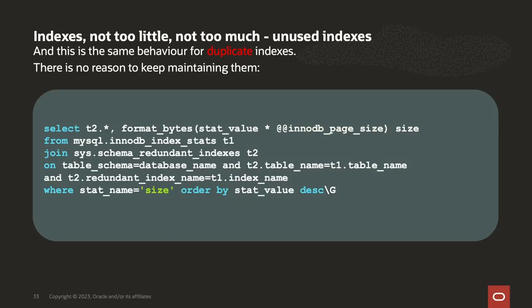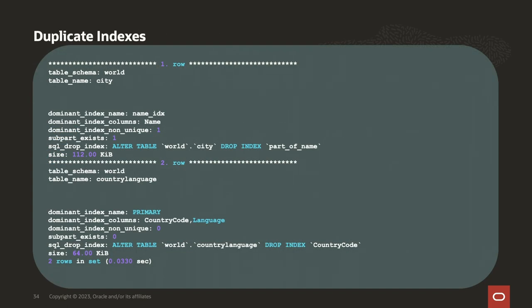Another issue is that sometimes people create duplicate indexes on the same column — you don't need that either. We can run that query and it'll spit out the ALTER TABLE statements to drop those indexes because there's already an index on world city and on country language. There are two of them because we don't prevent you from creating two, and there may be some edge cases where you'd want to, but we tell you.